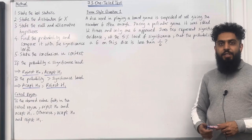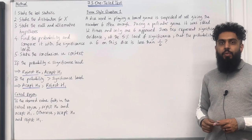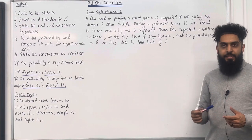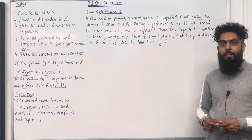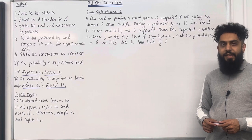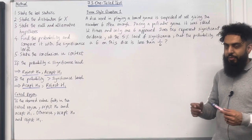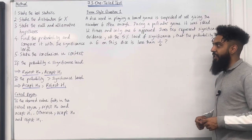Welcome back. In this YouTube video, I'm looking at 7.3 one-tailed test. 7.3 represents Chapter 7, Section 3 of the Pearson A-Level Maths Master 1 textbook. Let's go through the key facts of this section.